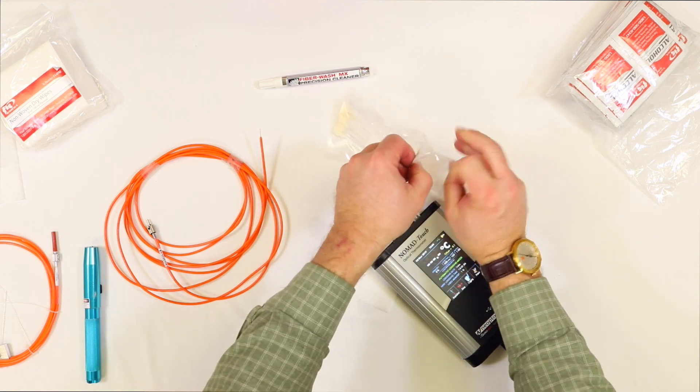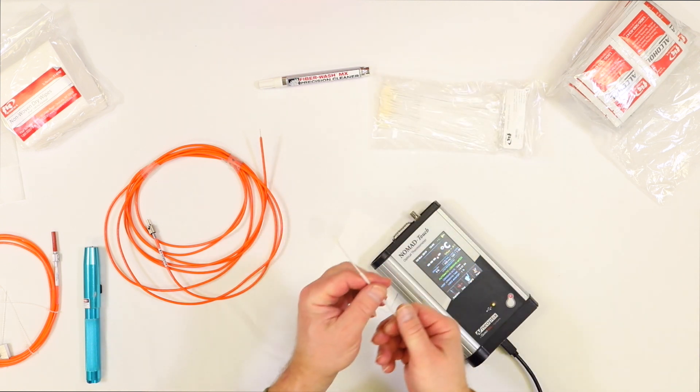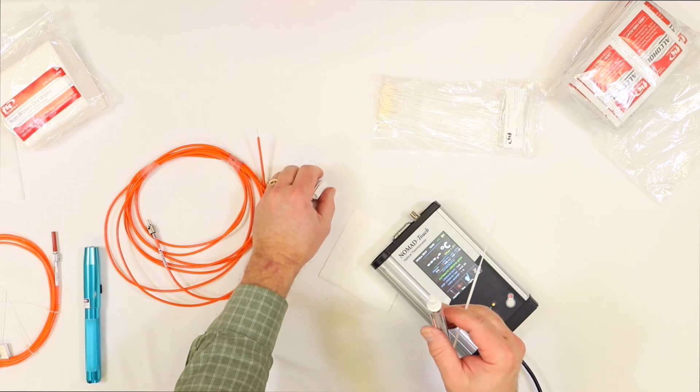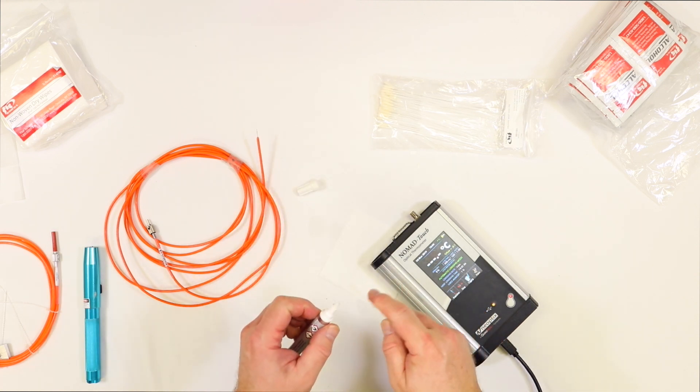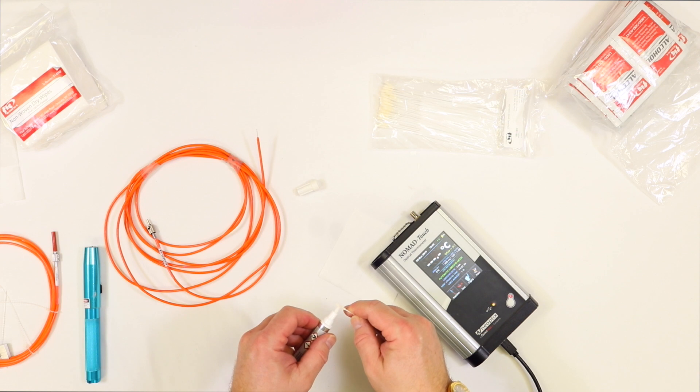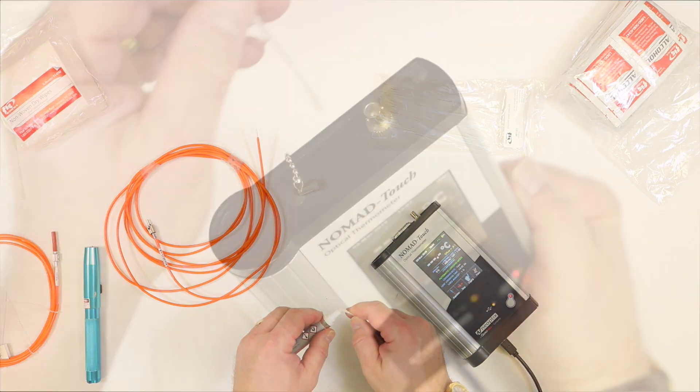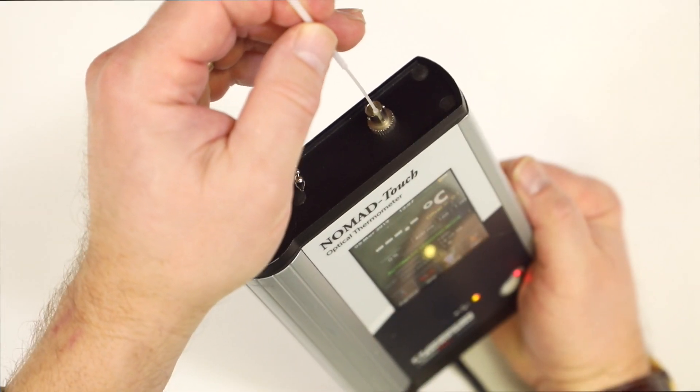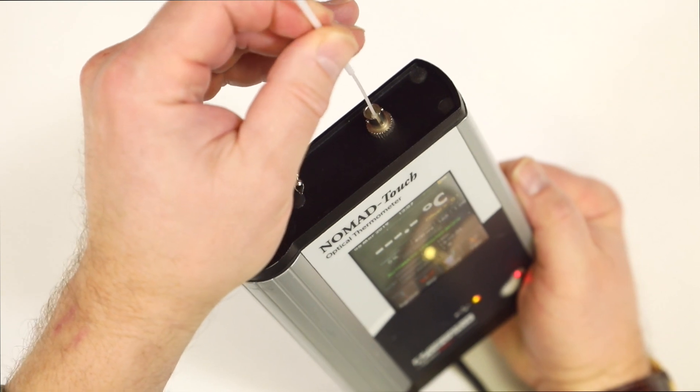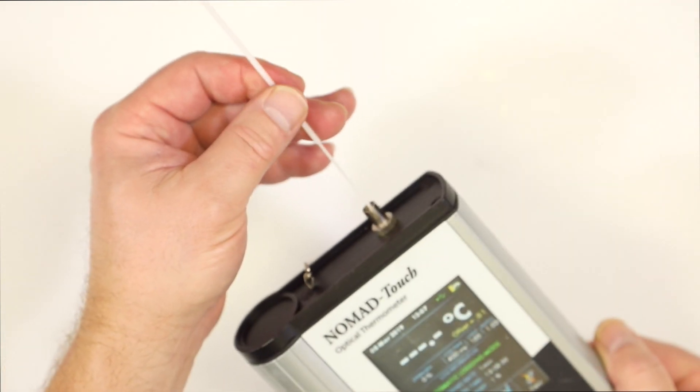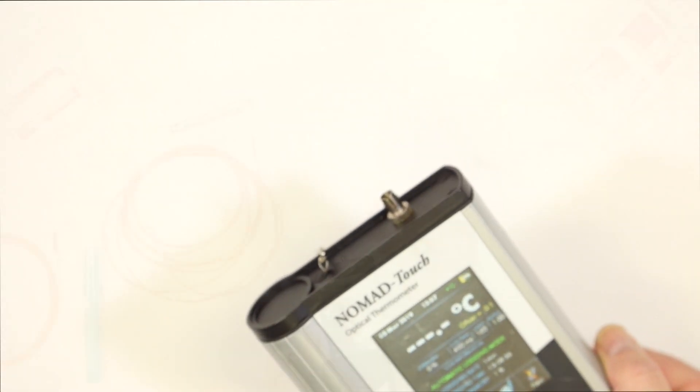This is a lint-free Q-tip. We can use the precision wash, put some of that on this. You could also just dip this in isopropanol if you wanted. Into the fiber mating port and we twist, and then we pull out all at once. So this is now clean.